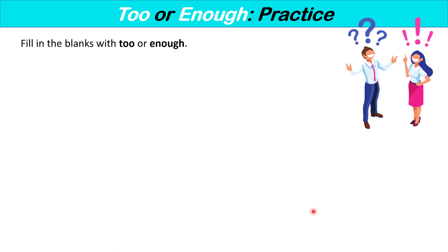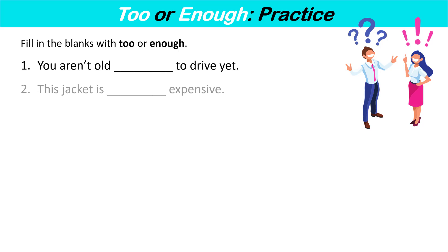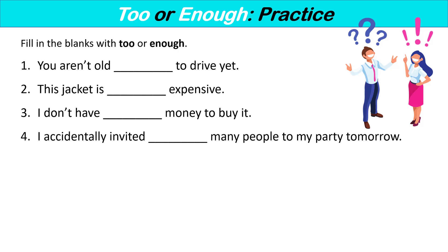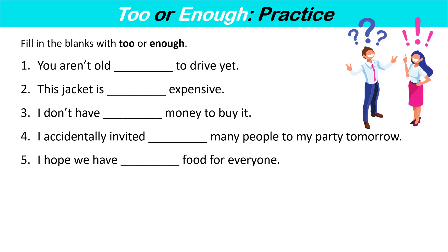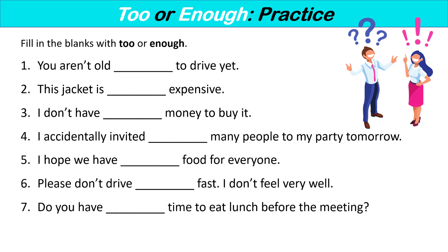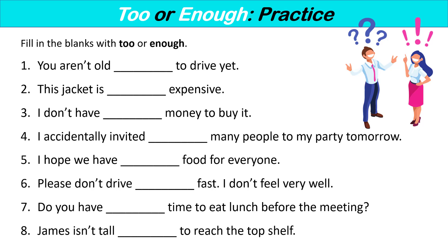Now we're going to do a practice — fill in the blanks with 'too' or 'enough.' Number one: you aren't old ___ to drive yet. Number two: this jacket is ___ expensive. Number three: I don't have ___ money to buy it. Number four: I accidentally invited ___ many people to my party tomorrow. Number five: I hope we have ___ food for everyone. Number six: please don't drive ___ fast — I don't feel very well. Number seven: do you have ___ time to eat lunch before the meeting? Number eight: James isn't tall ___ to reach the top shelf.